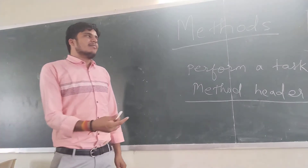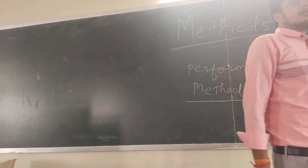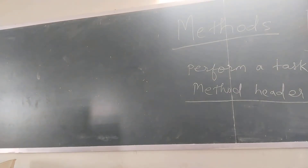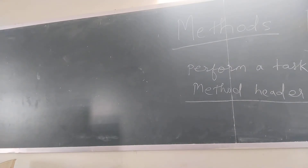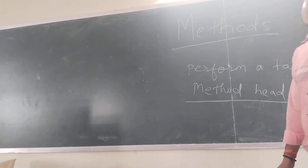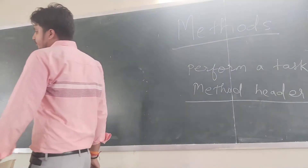Write down one example. Take return type, then method name — I want to do addition of two numbers, so I am taking method name as 'sum'. Here you can write parameters: int a, int b.